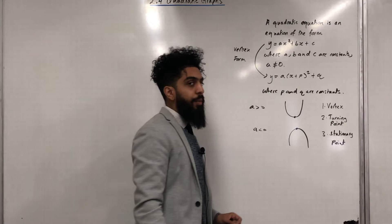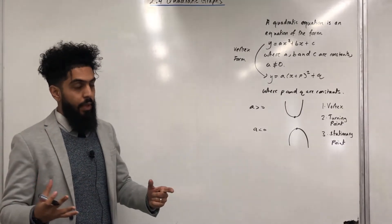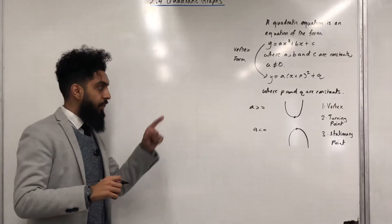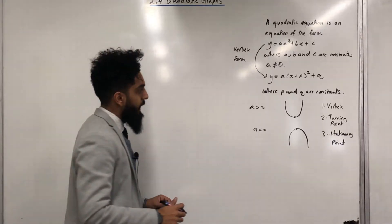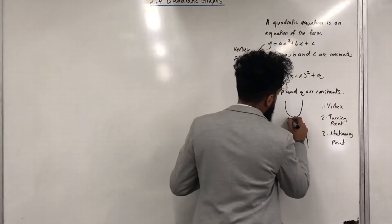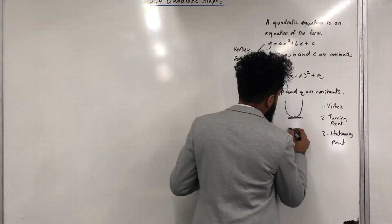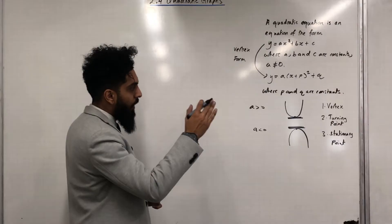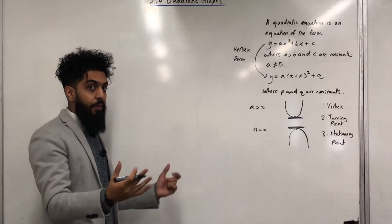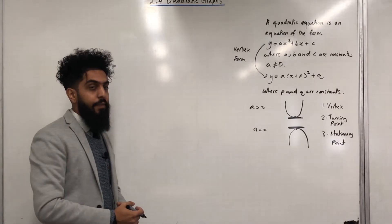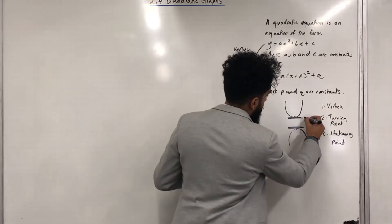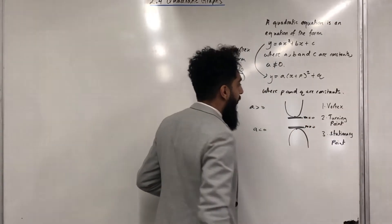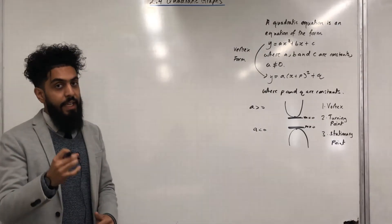Why are these two points called the stationary point? Consider two tangents to these two curves at these two points. Each of these tangents represents a flat horizontal line — the steepness is 0; in other words, the gradient is 0 at these two points. Hence, these two points are called stationary points.